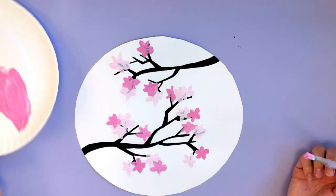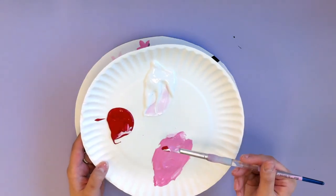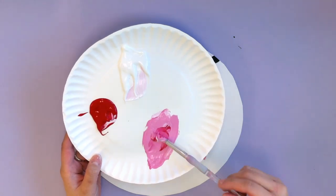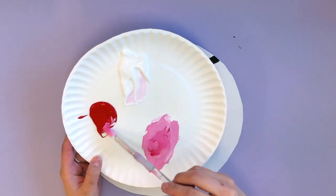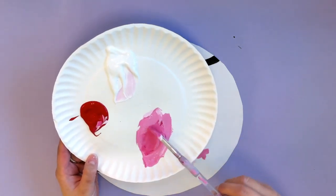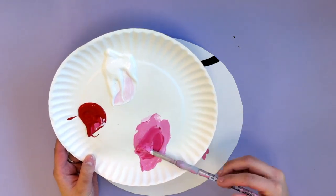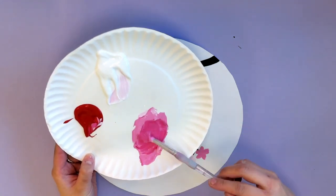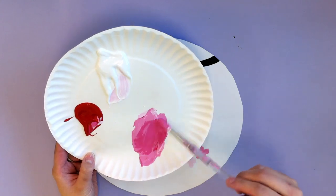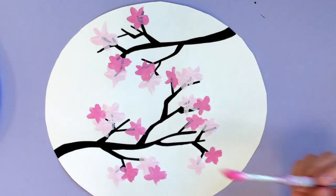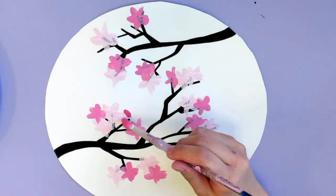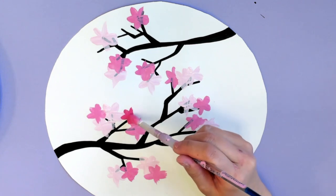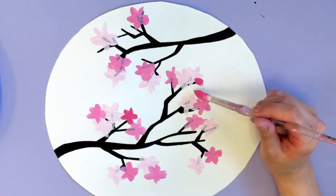When you're done with that, once again, I'm going to pick up some red. I'm going to mix that directly into the pink that I have. Just like before, I'm going to add this into my picture, and I'm just trying to think about balance. I'm trying to see where the cherry blossoms will look good with this darker color.